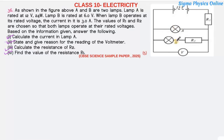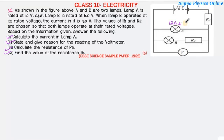In this circuit diagram, there are two lamps A and B connected in parallel, with resistor R2 in series with lamp B. These are all connected in series with resistance R1. The main supply voltage is 15 volt. Lamp A is rated at 12 volt, 24 watt. The current in lamp B is 3 ampere and the potential difference across B is 6 volt.